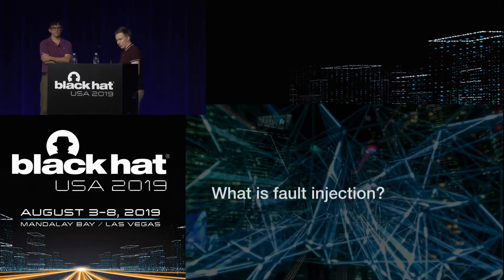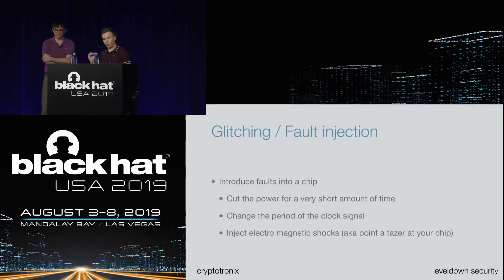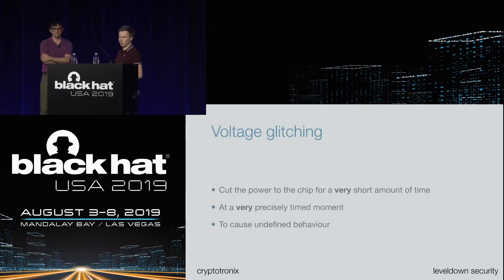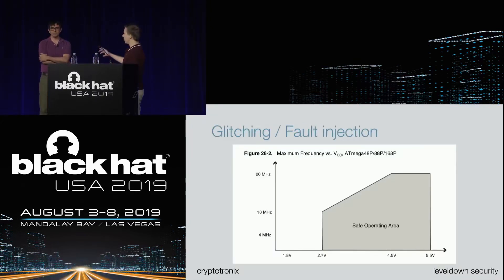So, what is fault injection? Fault injection is a term mainly used by professionals; in the hacker community we just call it glitching. The idea is you introduce faults into your chip — for example, you cut the power for a very short amount of time, you change the period of the clock signal, or you inject electromagnetic shocks, basically pointing a taser at your processor. What we'll talk about today is mainly voltage glitching: cutting the power to the chip for a very, very short and precisely timed moment, which can cause undefined behavior beyond the chip's safe operating area.